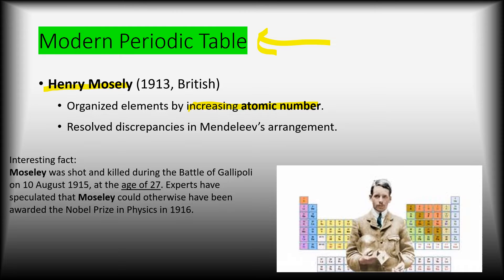An interesting fact: Mosley was only 27 years old when he came up with this periodic table. He was most likely going to get the Nobel Prize in Physics, but he went into the British Army and was shot and killed in a battle called the Battle of Gallipoli. Imagine being 27 and developing an entire periodic table — it's pretty impressive.